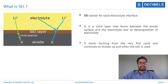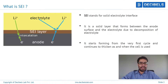SEI stands for Solid Electrolyte Interface and is a solid chemical layer that gets formed on the anode, or basically the negative electrode, of the lithium-ion cell over time because of what is called electrolyte decomposition. The formation of the SEI layer, or the decomposition of the electrolyte, starts from the very first cycle, or basically the very first time the cell is used.